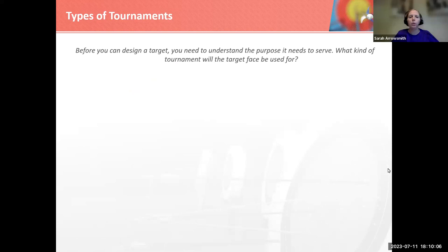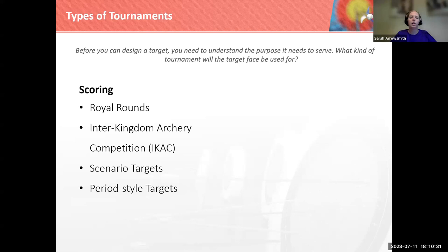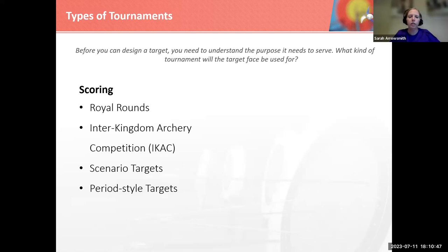Before you can design a target, we need to understand what purpose it serves. What kind of tournament will the target face be used for? There are typically two different types of tournaments. The ones that our frequent archers will recognize are royal rounds, which the SCA uses for our archery ranks — shot on standard 60-centimeter targets at known distances. Our ICAC is an inter-kingdom competition across all of the SCA, very similar to royal rounds in how it's conducted and the types of targets used. All of those tournament types have set scoring, so everybody knows how to score.